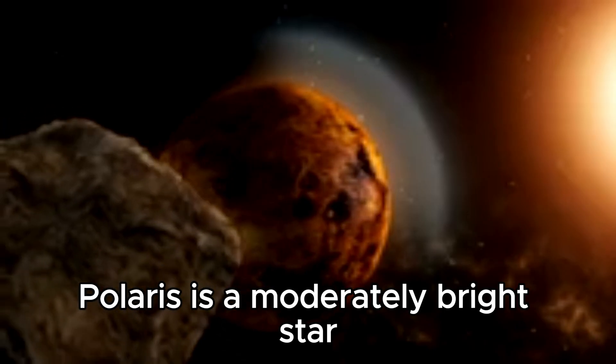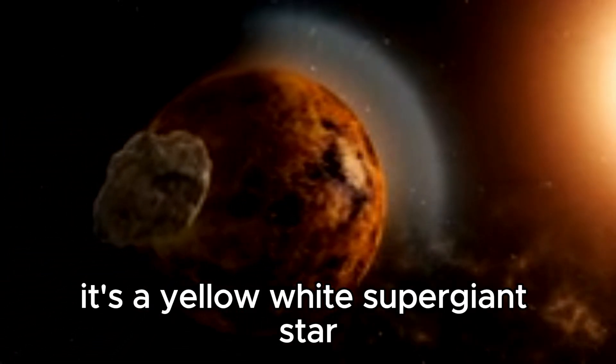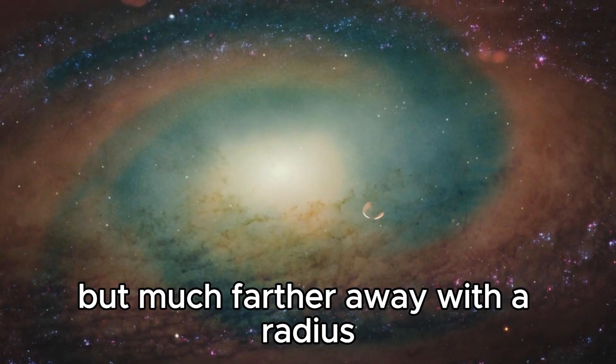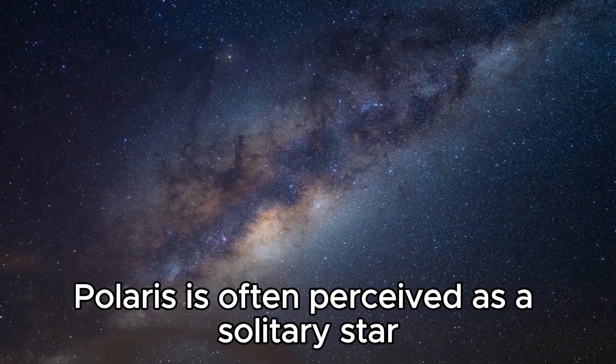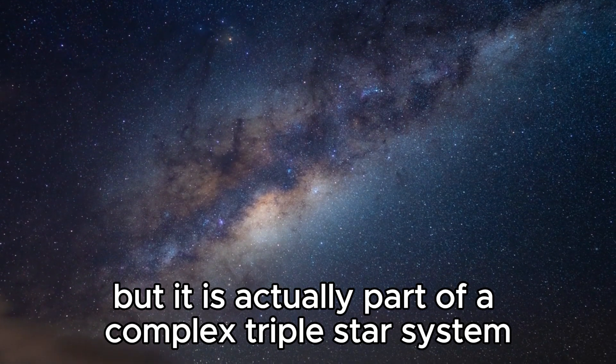Polaris is a moderately bright star and, in terms of size, it's a yellow-white supergiant star, considerably larger and brighter than our Sun but much farther away. With a radius estimated to be about 40 times that of the Sun, Polaris is often perceived as a solitary star, but it is actually part of a complex triple star system.